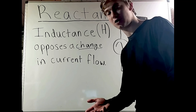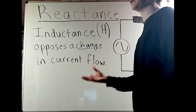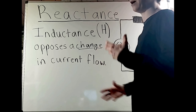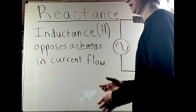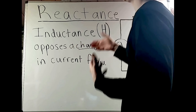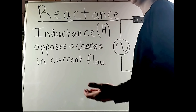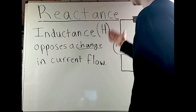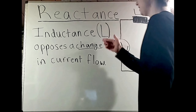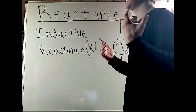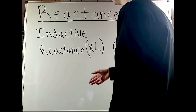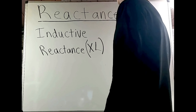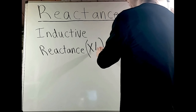AC means alternating current. How inductance opposes this change in current is quite interesting — it does so by producing its own self-induced voltage, which acts as a counter-electromagnetic force opposing current flow. This opposition to current flow that is a product of inductance can be measured and is known as inductive reactance. The SI unit for inductance is the henry, and inductors use the symbol L. Therefore inductive reactance uses the symbol XL, where X stands for reactance and L stands for inductance.